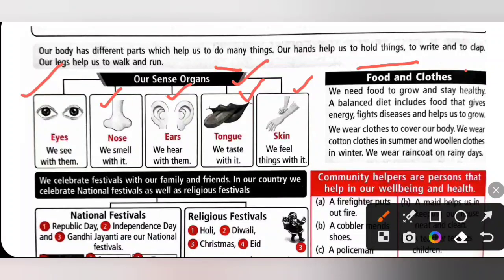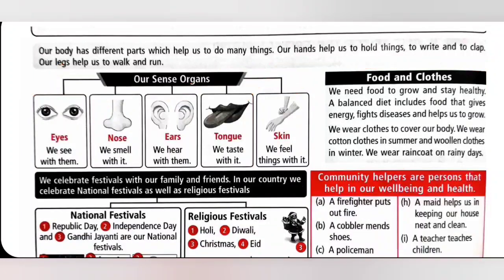Food and Clothes. We need food to grow and stay healthy. A balanced diet includes food that gives energy, fights diseases and helps us to grow. We wear clothes to cover our body. We wear cotton clothes in summer and woolen clothes in winter. We wear raincoat on rainy days.